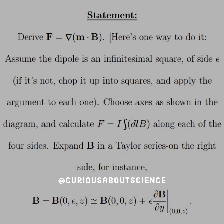Assume the dipole is an infinitesimal square of side epsilon. If not, chop it up into squares and apply the argument to each one. Choose axes as shown in the diagram and calculate F equals I integral dℓB across each of the four sides. Expand B into a Taylor series on the right side.